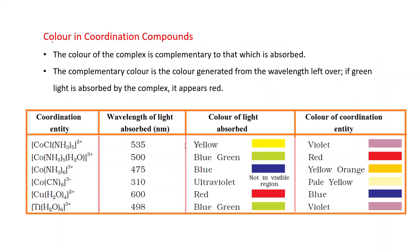Now, color in coordination compounds. The color of the complex is complementary to that which is absorbed. The complementary color is the color generated from the wavelength left over. For example, the complex [Co(Cl)(NS)₃]²⁺ absorbs radiation of 535 nanometers, which corresponds to yellow color, but the coordination entity appears violet.